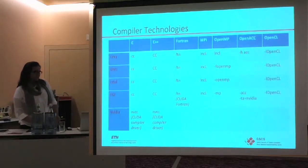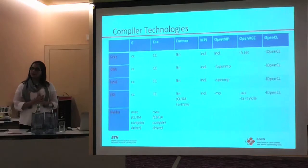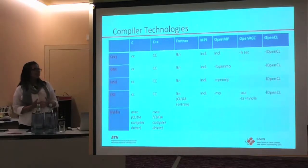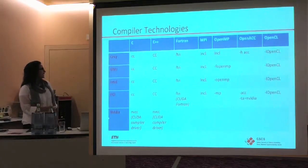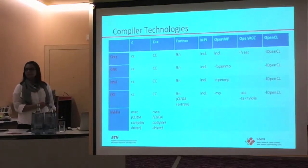The first thing is compiler technologies. I'm not assuming all of you are on Rosa or Todi or any other platform, but if you are, you will find from a multi-core programming point of view absolutely the same environment. You have your typical compilers: Cray, GNU, Intel, PGI. In addition, you have NVIDIA. For those of you who are on the XK7 system, absolutely nothing changes. We have all the compiler wrappers available on the system right now.